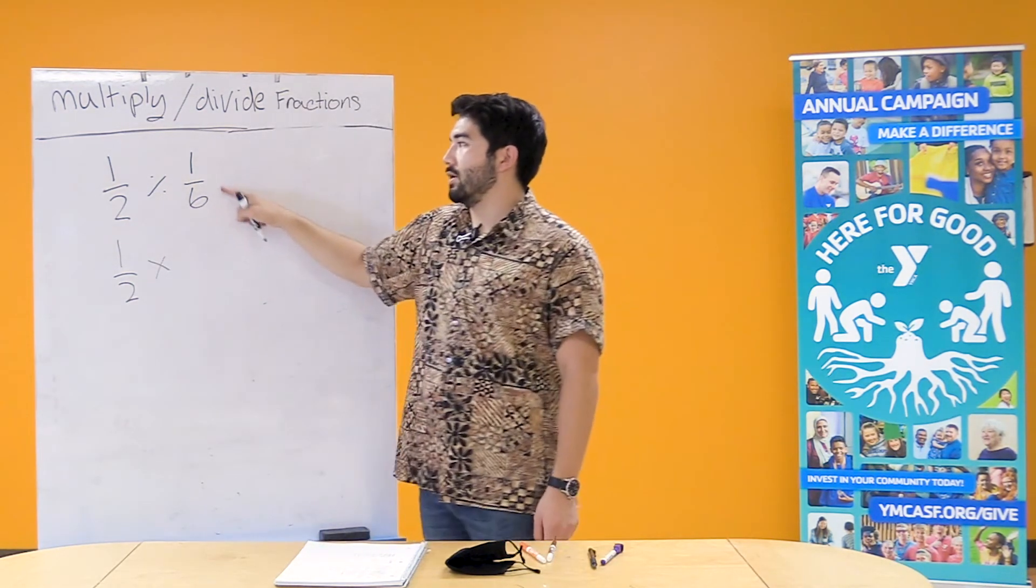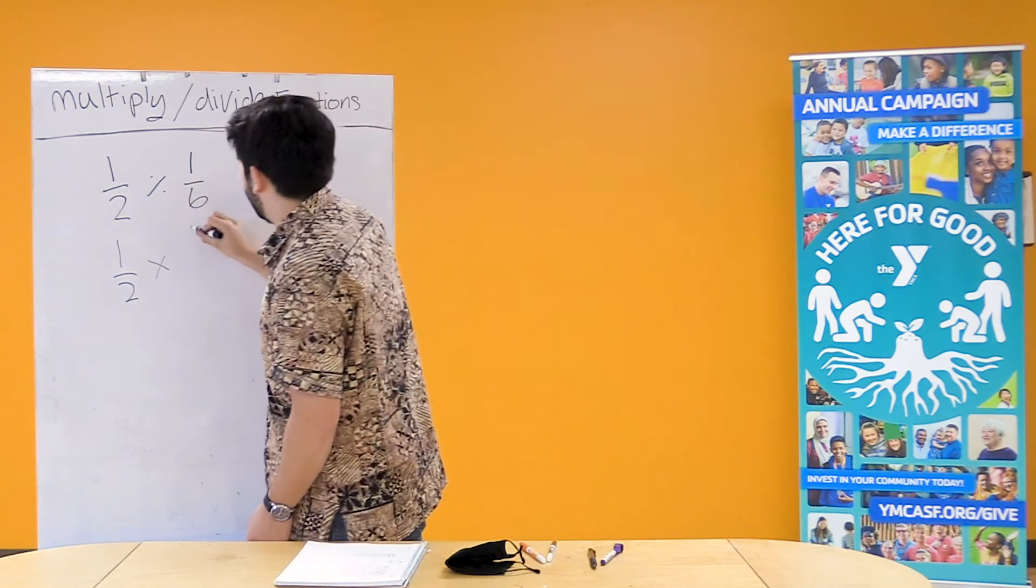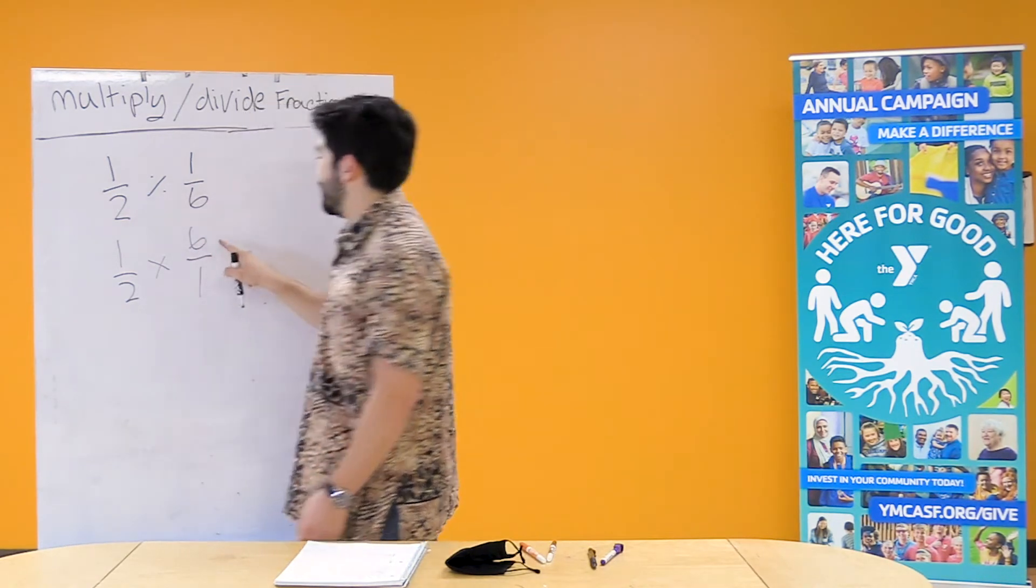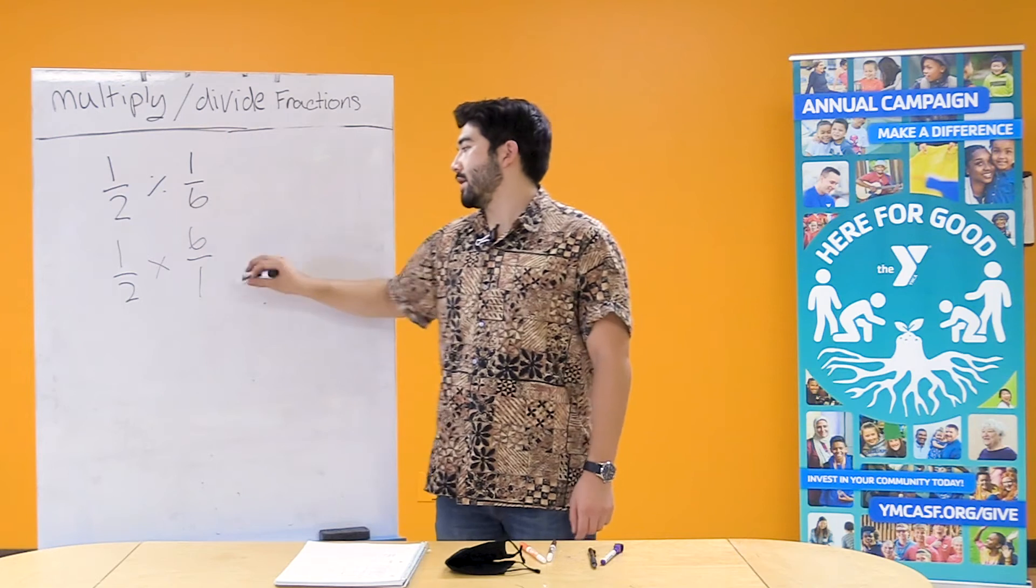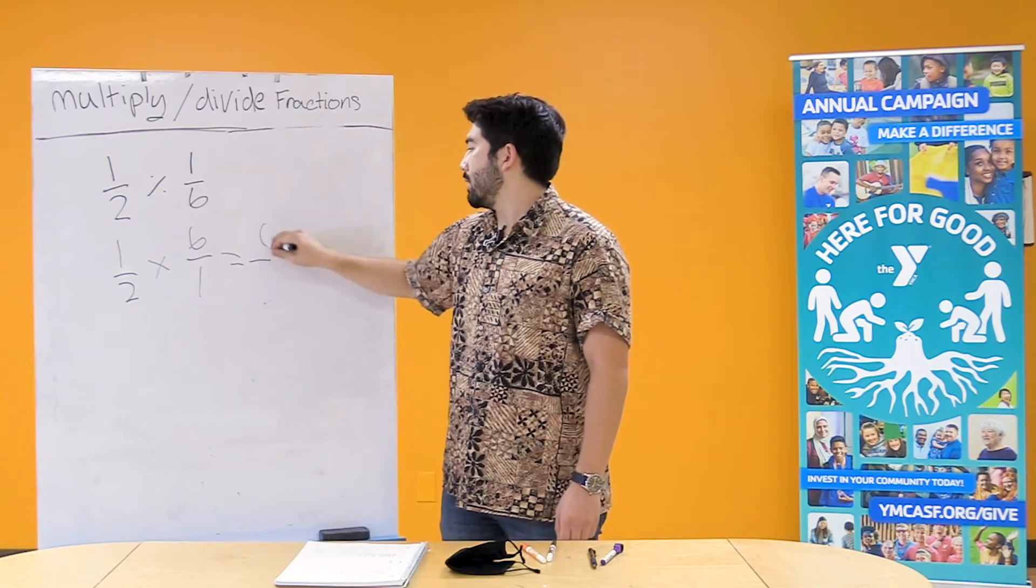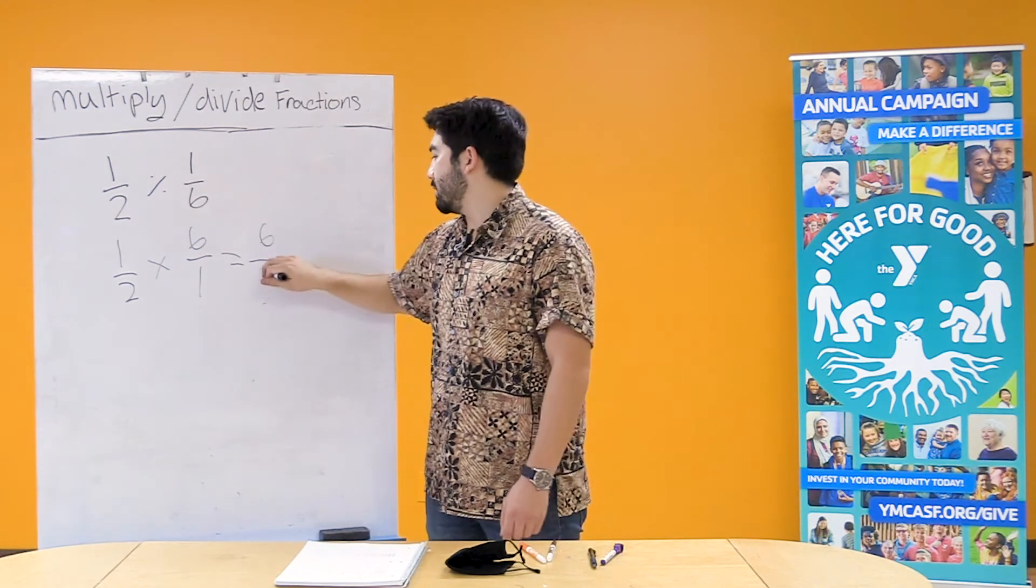And we're gonna flip our second fraction. So instead of 1/6, it's gonna be 6/1. So 1 times 6 equals 6. 2 times 1 is equal to 2.